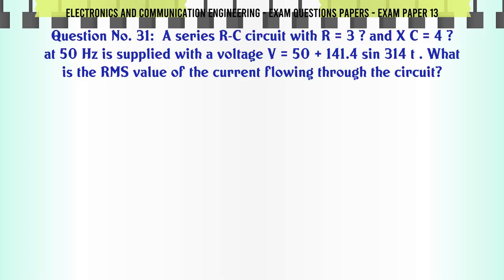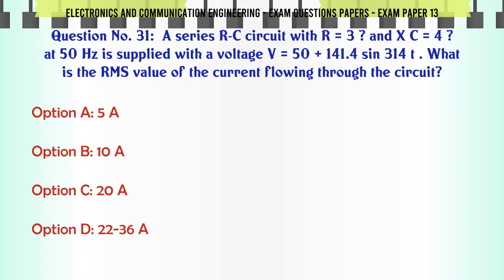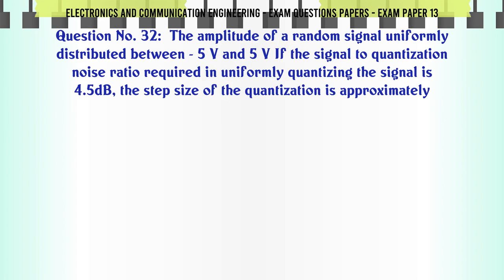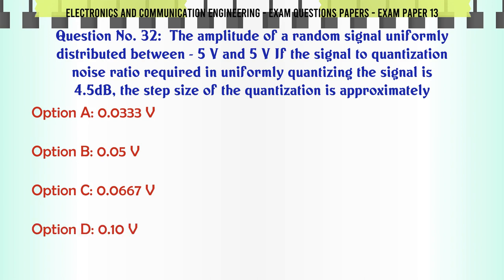A series RC circuit with R = 3 and XC = 4 at 50 Hz is supplied with a voltage V = 5(100 + 41.4 cos(314t)). What is the RMS value of the current flowing through the circuit? A: 5A, B: 10A, C: 20A, D: 22.36A. The correct answer is 20A.